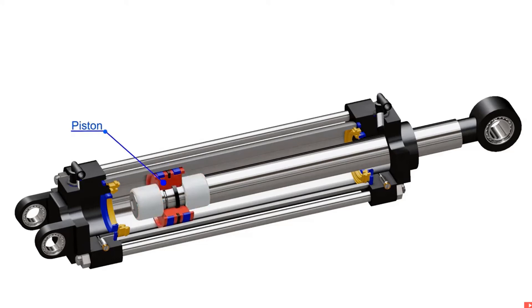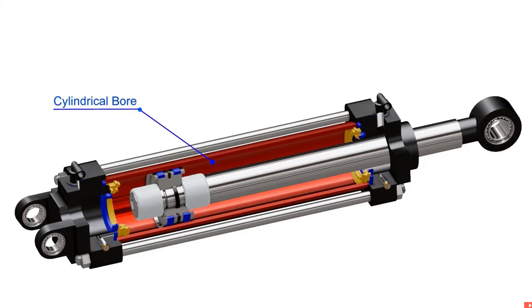The piston reciprocates back and forth when there is pressure difference between any of the two sides. A static seal ensures air tight sealing between the piston and rod. Piston guide rings are assembled to prevent metal to metal contact of piston and cylinder. Piston seal provides air tight sealing between the cylinder and piston. This whole assembly then goes into a cylindrical bore.